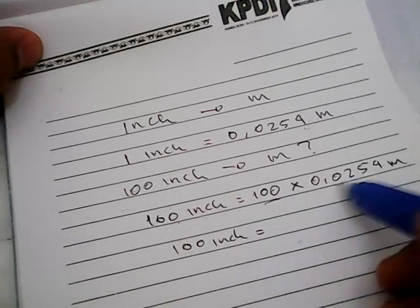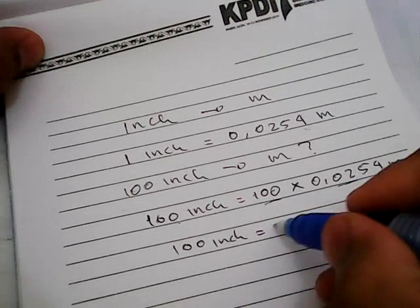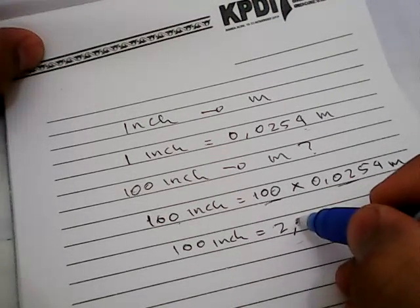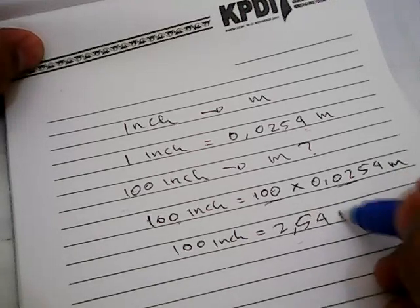Move 2 decimal places. Now, we got 100 inch is equal to 2.54 meters.